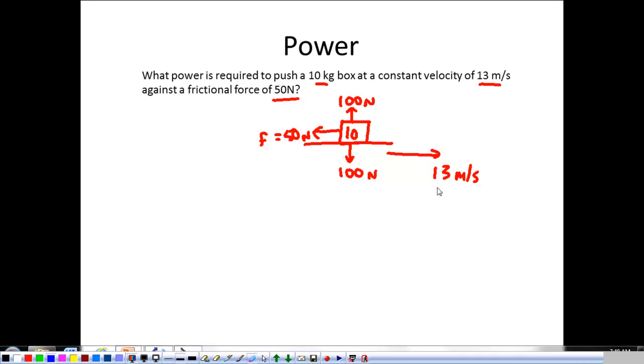So, that leaves me with a problem. I don't know how hard I'm pushing. But I do know that this 13 meters per second is constant, which means my net force has to be zero, which means my applied force is going to have to be equal to friction, 50 newtons. So, I'm pushing with a force of 50 newtons. And I want to know the power required to push at 50 newtons at a speed of 13 meters per second.